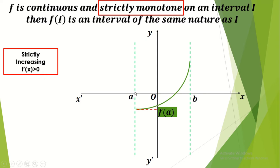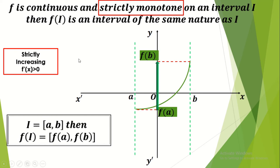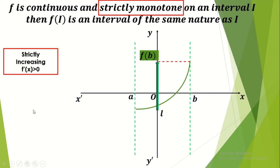As x tends to a, f(x) tends to f(a), and as x tends to b, f(x) is f(b). We say this function is continuous on the interval I = [a, b], a closed and bounded interval. Then f(I) will have the same nature — it's a closed and bounded interval equal to [f(a), f(b)]. We start from the smaller to the greater. Since f is increasing, a < b implies f(a) < f(b). So f(I) is the interval [f(a), f(b)], a closed and bounded interval of the same nature as I.